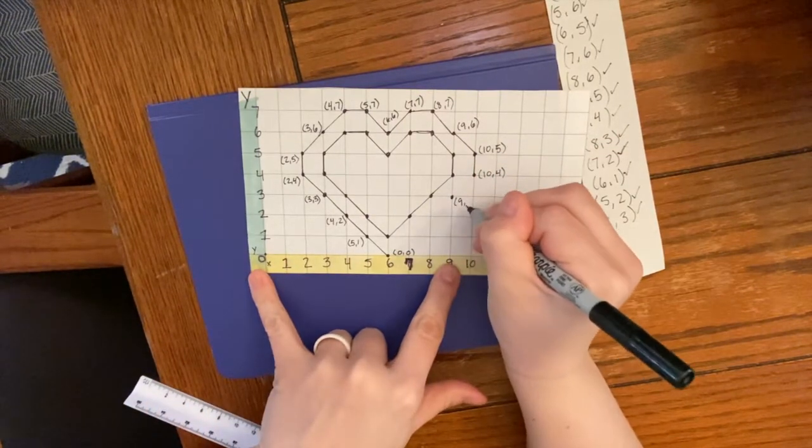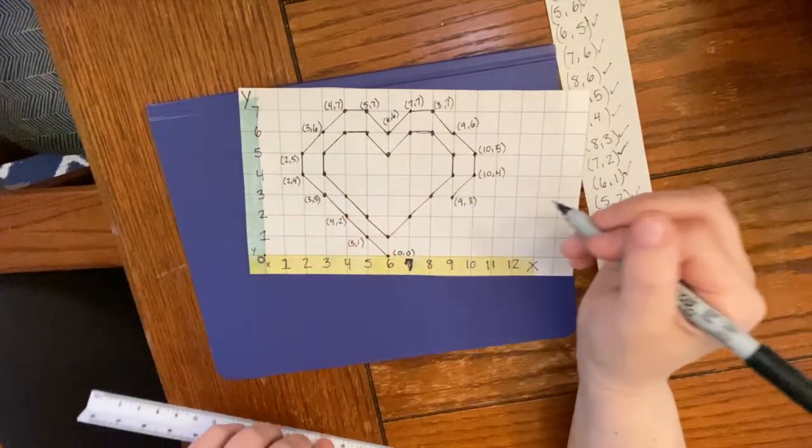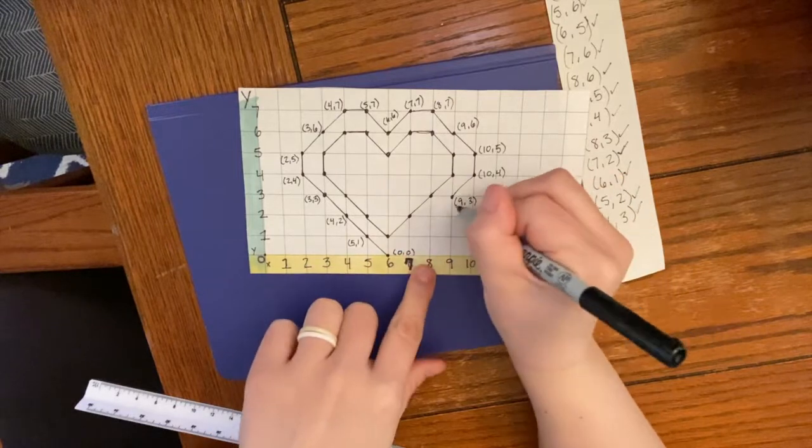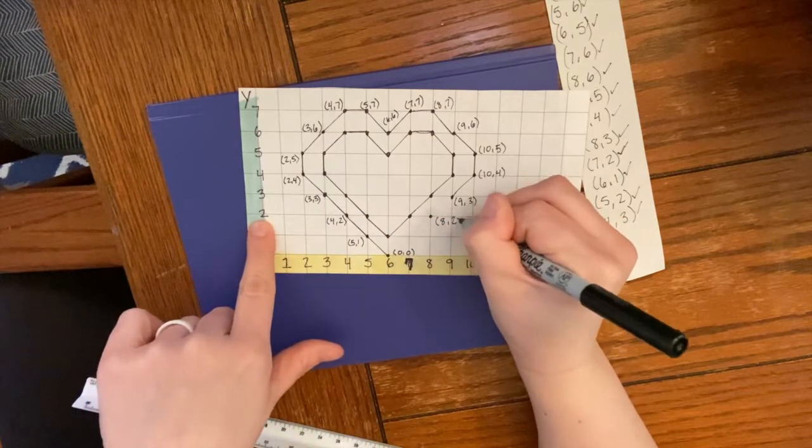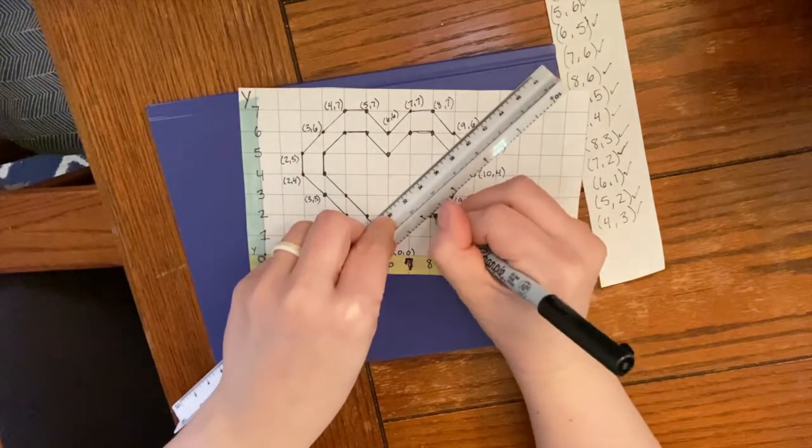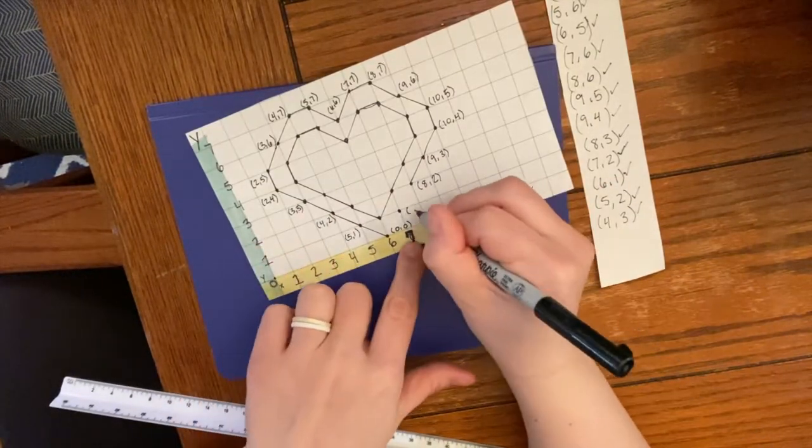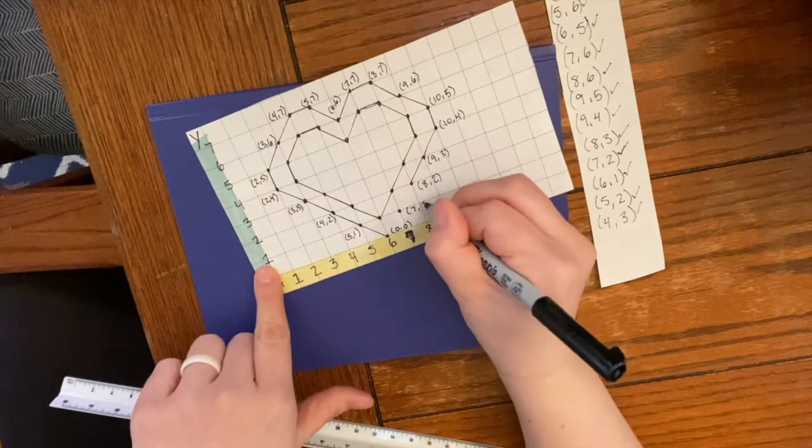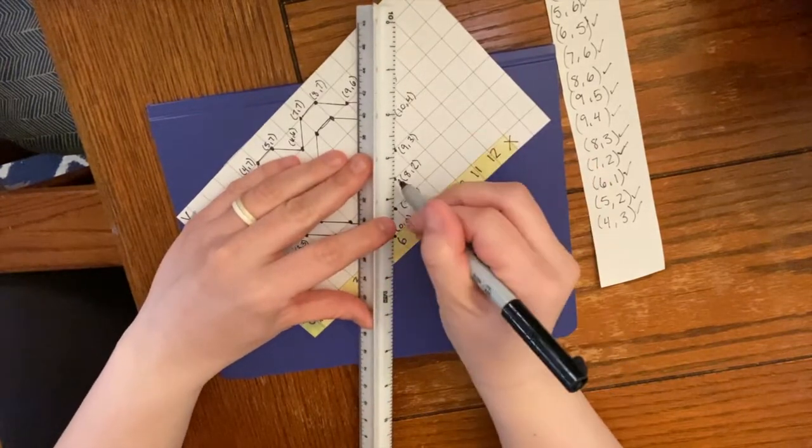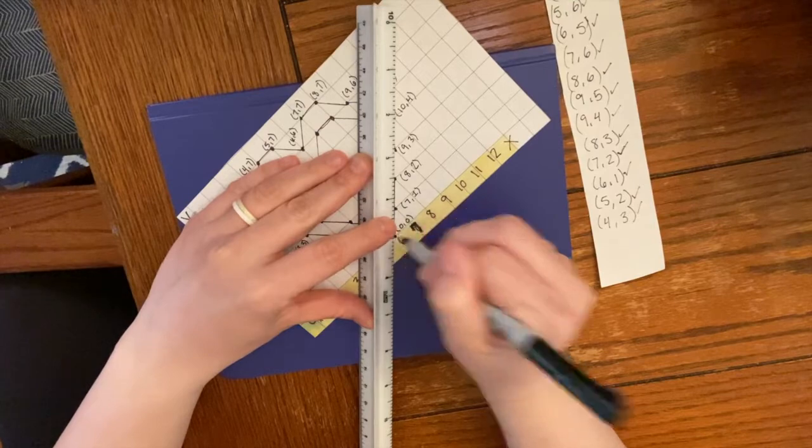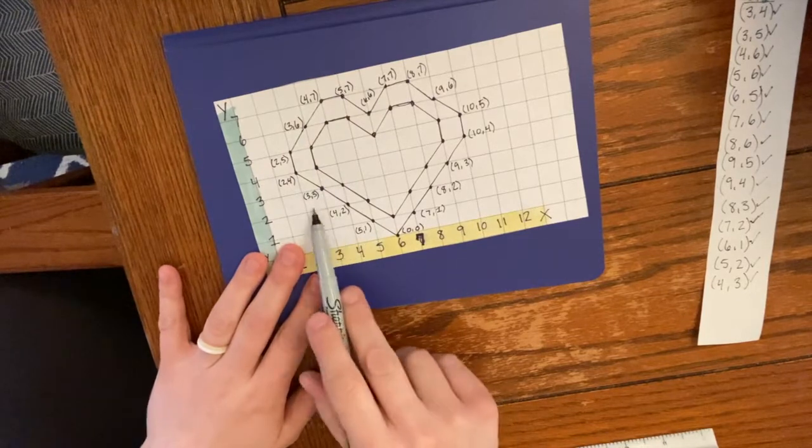Here, 9, 3. Here, almost done. 8, 2. Here, it's our last one. 7, 1. I'm going to connect these last three dots. There. You can see we can put our coordinates right by our dots, just like that.